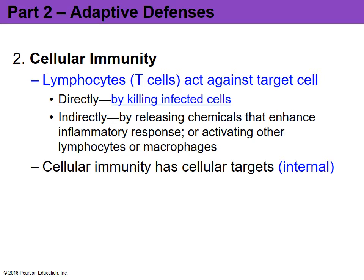Your lymphocytes — one of your white blood cells — can give you your B cells for humoral immunity and your antibodies, your T cells for cellular immunity, and also your natural killer cells. Your natural killer cells are part of your innate non-specific defense system, which we discussed in part one of our chapter 21 lecture.